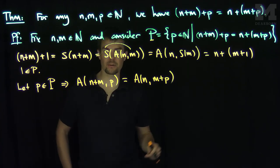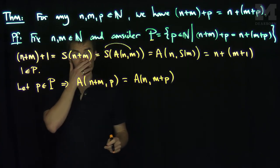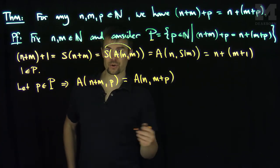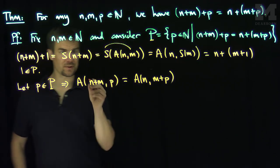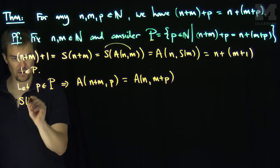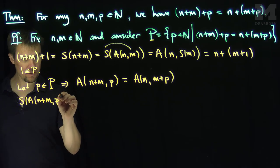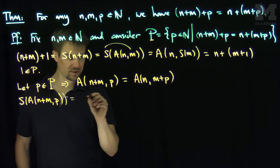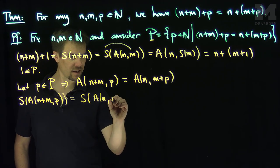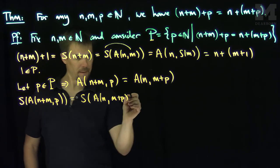And of course we can put more additions in here, right? But this helps us with our notation over here. So I'd like to take the successor of this relationship. So what does that tell us? So this tells us that the successor of A(n+m,p) is equal to the successor of A(n,m+p).